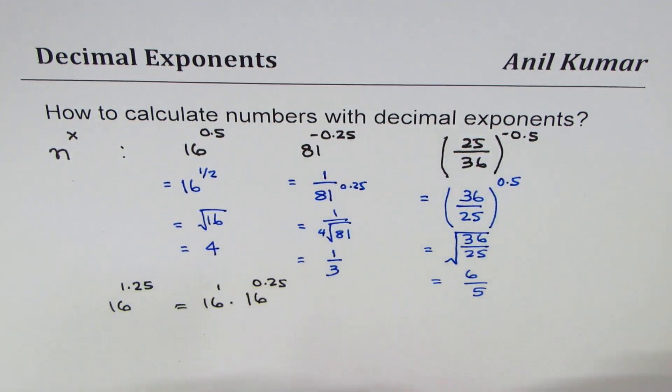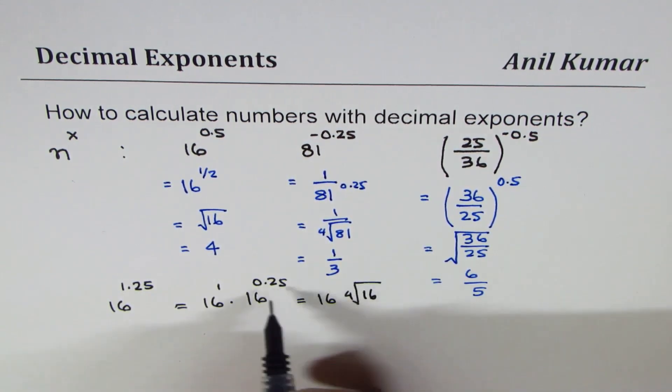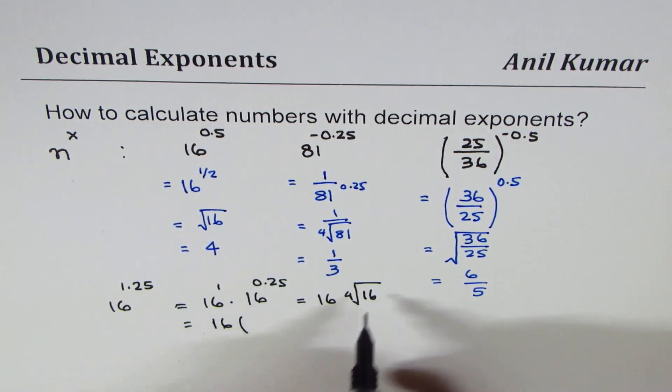So it could be written as 16 times fourth root of 16. The fourth root of 16 - square root is 4, and we can write this as 16 times 2, so that gives you the result 32.